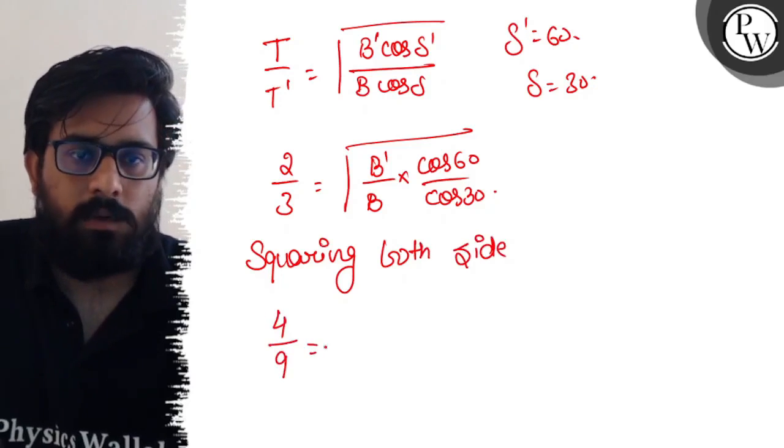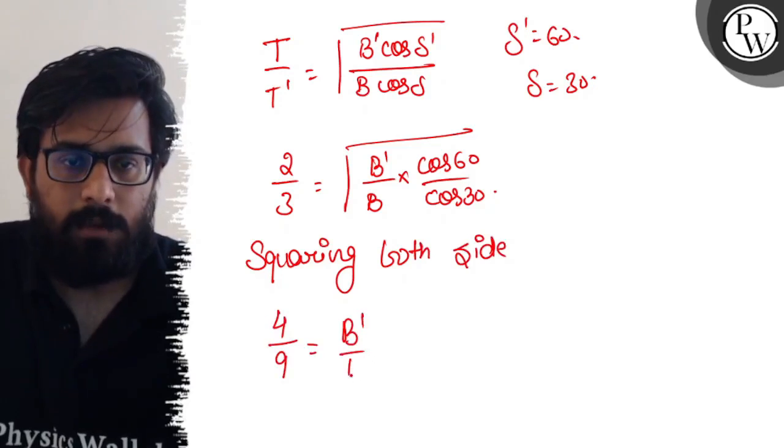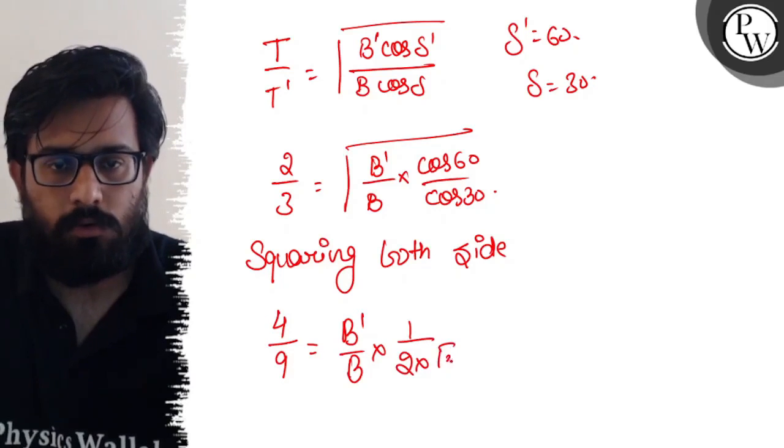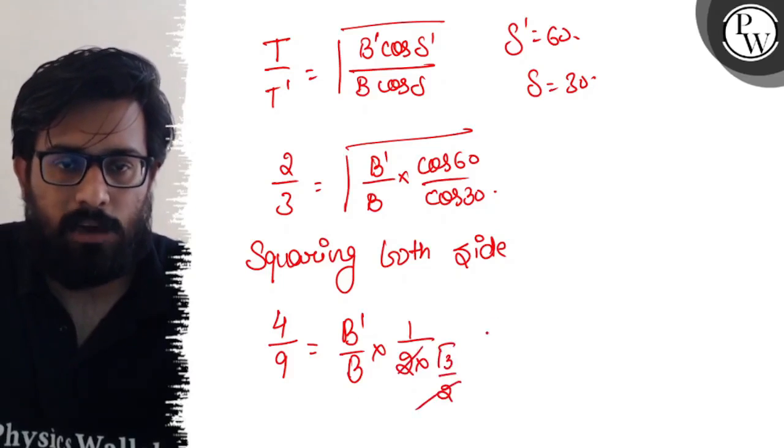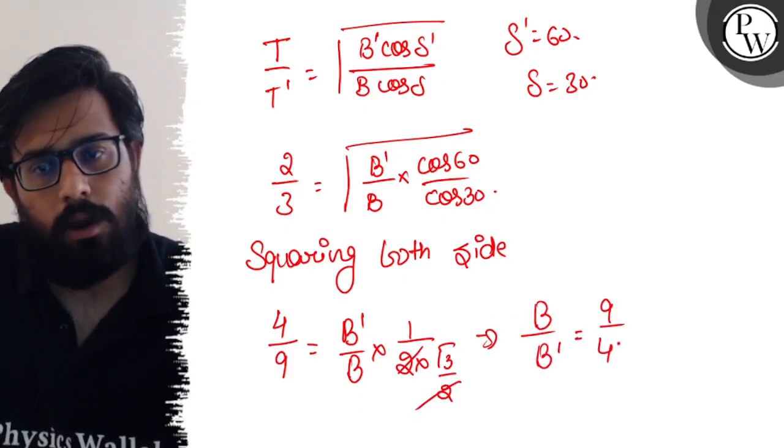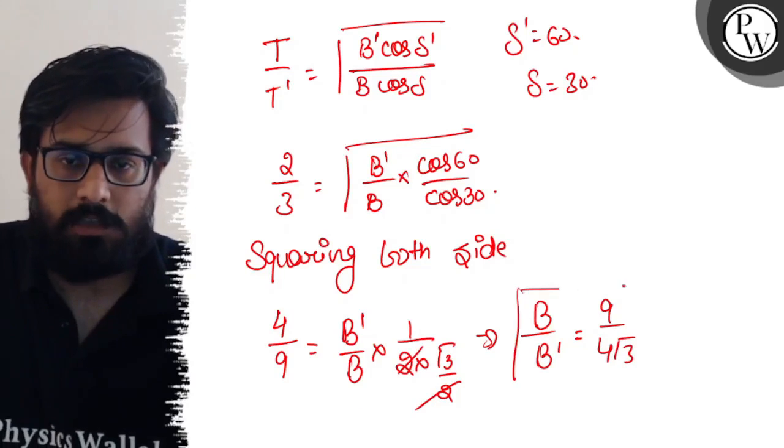4/9 equals B'/B × (1/2)/(√3/2). The 2s cancel out and the ratio of B/B' can be written as 9/(4√3). This is your final answer.